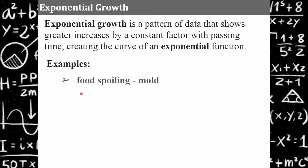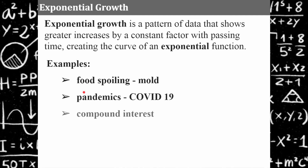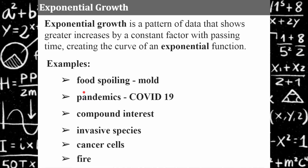Here are some real-world examples. Mold growing on spoiling food is an example of exponential growth. COVID-19 is an exponential function. Compound interest — the interest you earn in a savings account every month. An invasive species. Cancer cells. Fire. Things are multiplying and growing by a factor. Starting with one person infected, that person infects many people, and those people go on to infect many more. It just spider webs out — that's an exponential growth function.